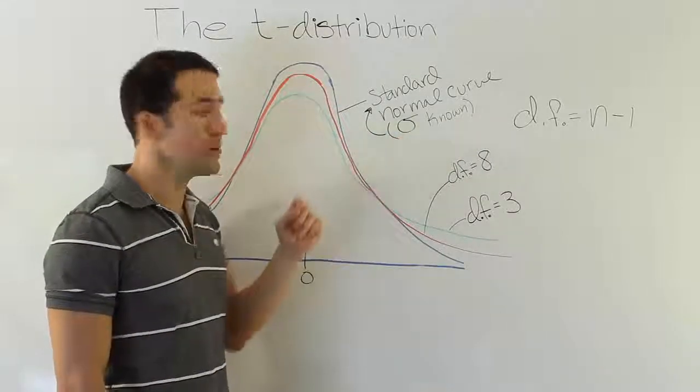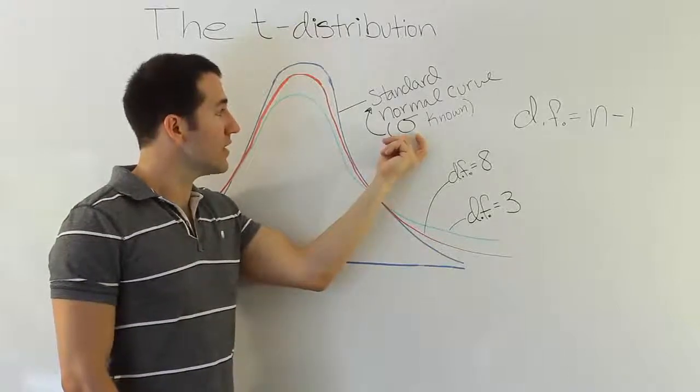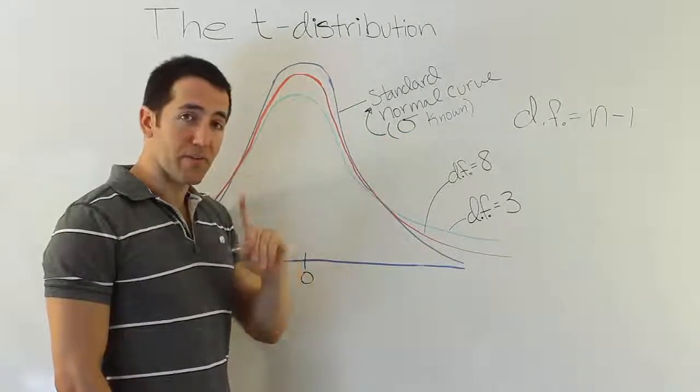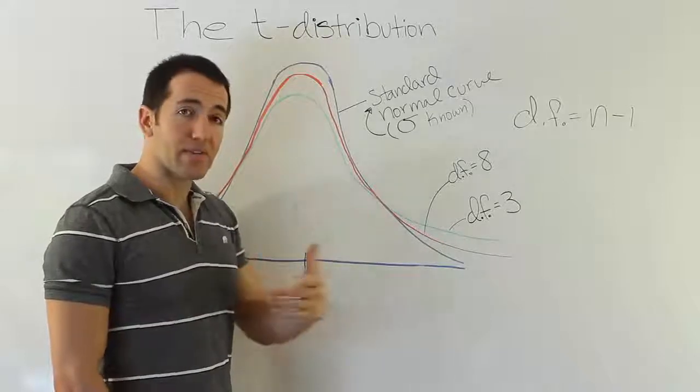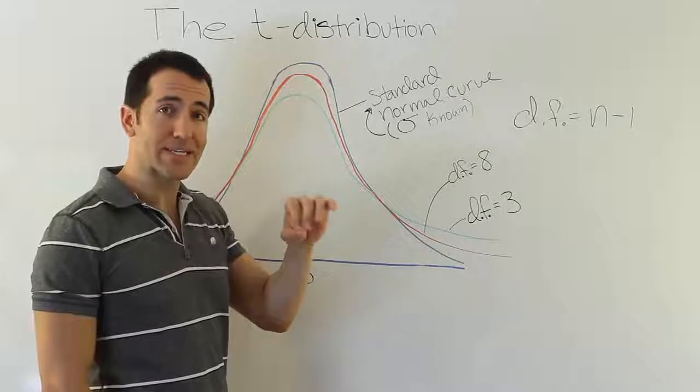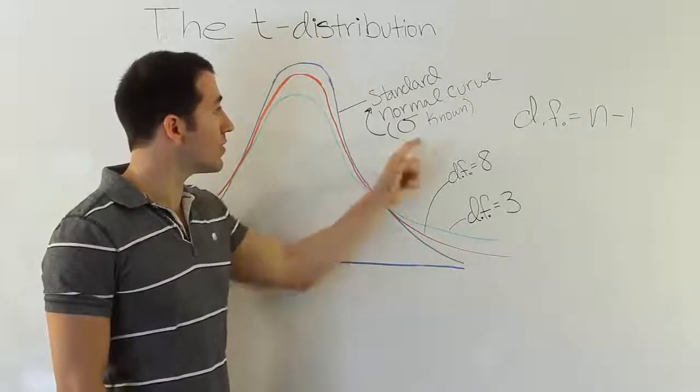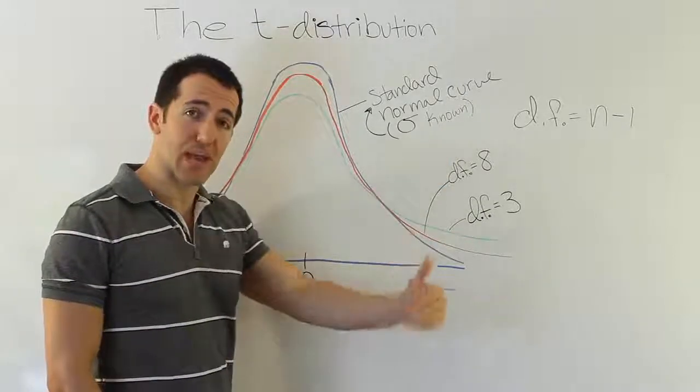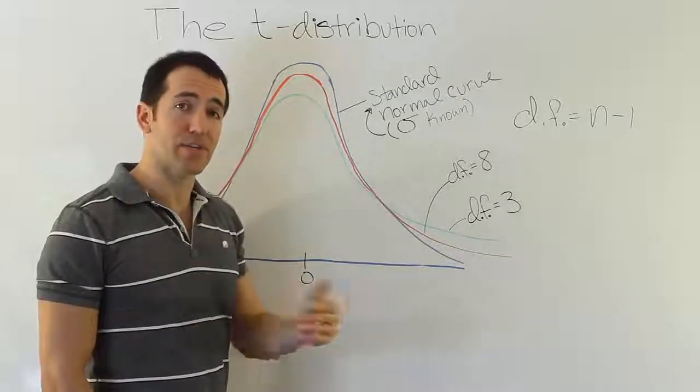Why is that important? Well, this population standard deviation is a single value. If it's known, that means that when we got a different sample, it wouldn't change. Because even though the sample itself would have a sample standard deviation, that wouldn't matter because we'd know the population value, and we would just use that as the measure of variation for the problem.